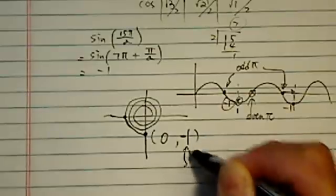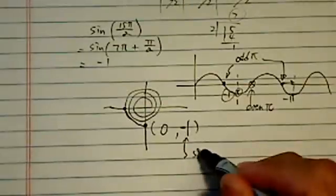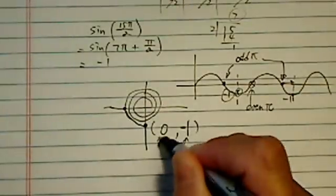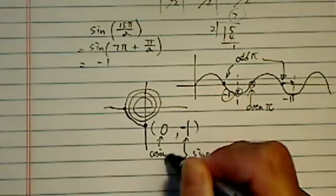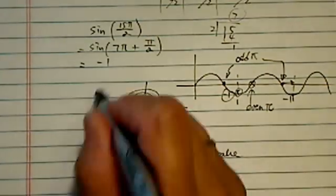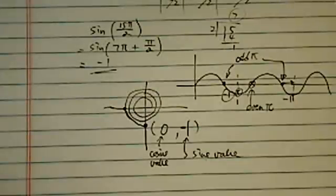The y value is always the sine value, whereas this one is cosine value. So either way, you're going to get minus 1. Alright, that's how we handle this kind of problems.